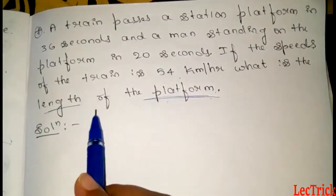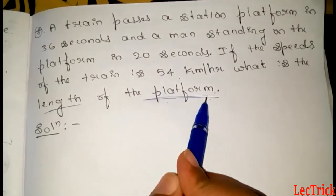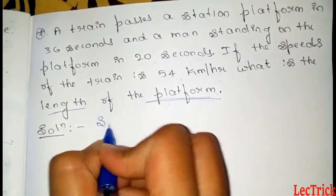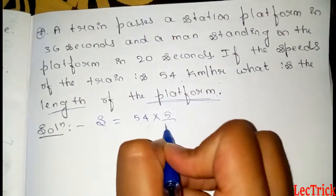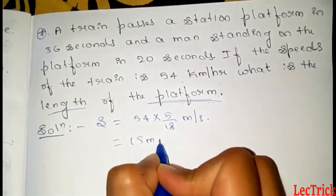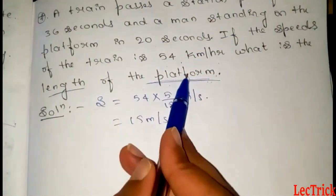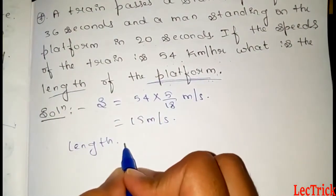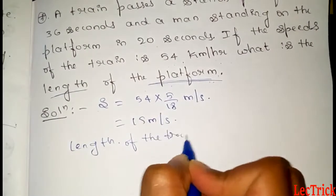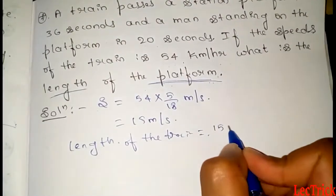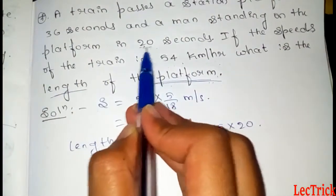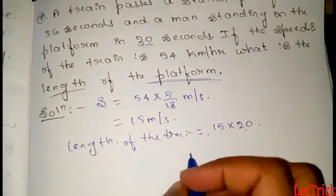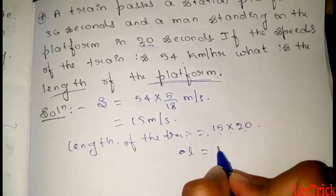We have to find out the length of the platform. First, convert 54 km per hour: 54 times 5 by 18 equals 15 meters per second. Now find the length of the train: length equals speed times time equals 15 times 20 equals 300 meters.